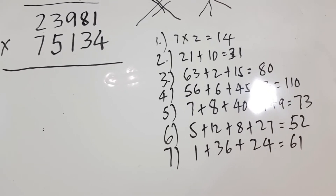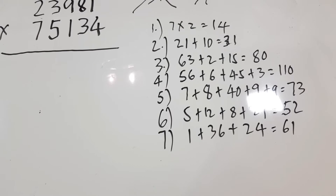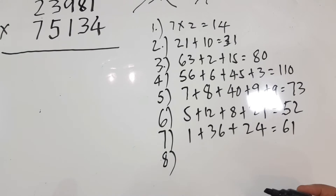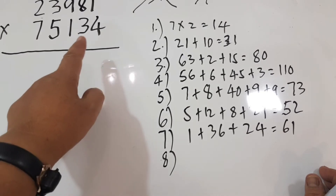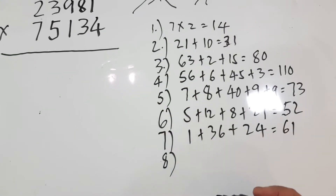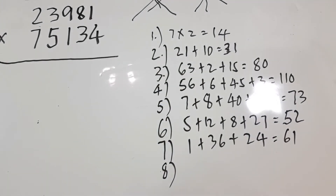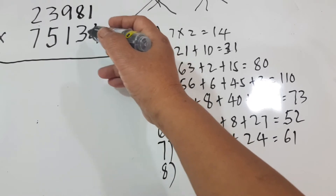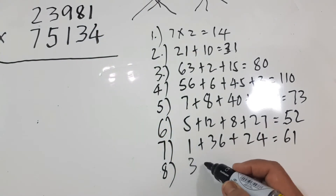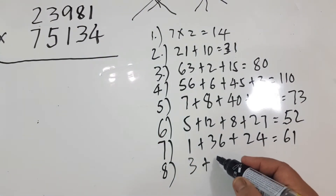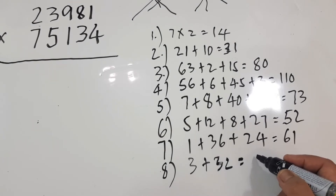Step 8: We have this one and this. So 3 times 1 is equal to 3, plus 4 times 8 which is equal to 32. So the total is 35.